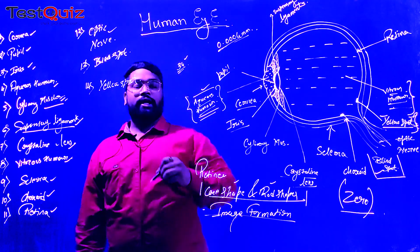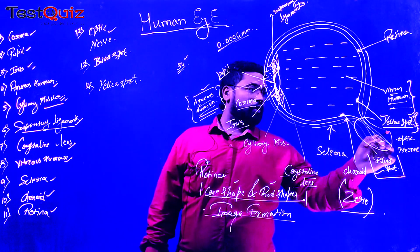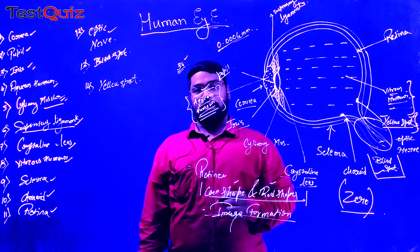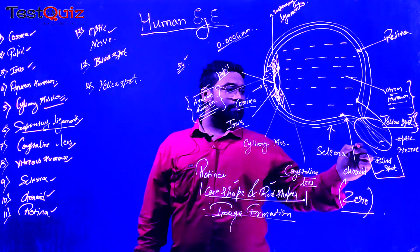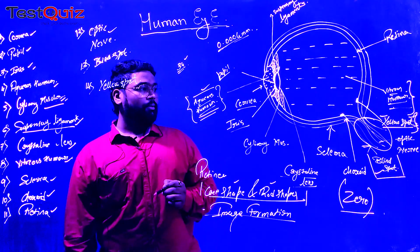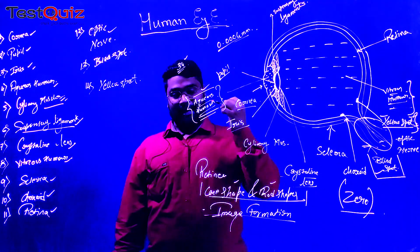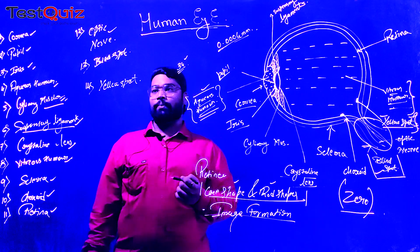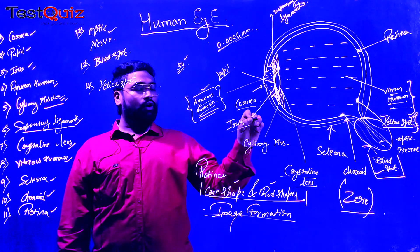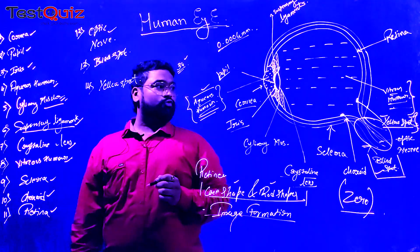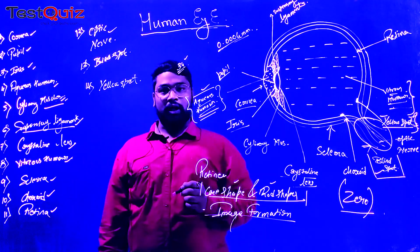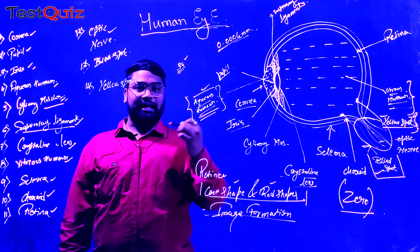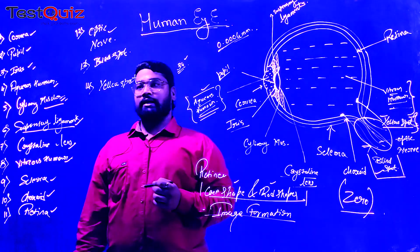Next, we have the optic nerve. The optic nerve transmits the image formed at the yellow spot to the brain with the help of an electrical impulse. Optic nerves are completely responsible for the transmission of the image information to the brain. The right eye is connected to the left side of the brain and the left eye is connected to the right side of the brain. The image which is formed in the yellow spot inside the eye has to be real and inverted, and when the image information is transferred to the brain, that real and inverted image will be converted into direct and virtual.